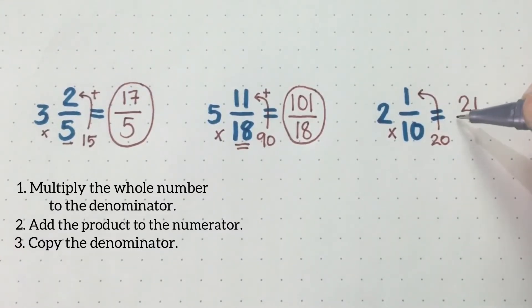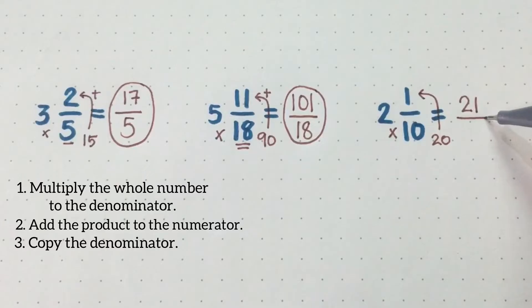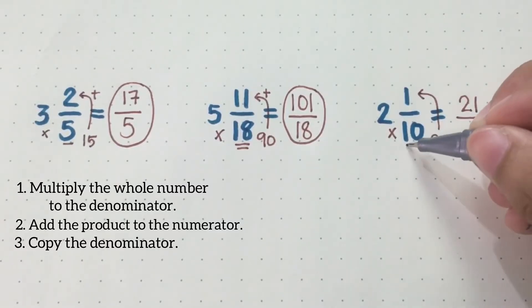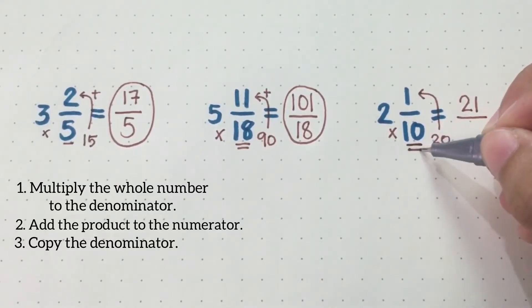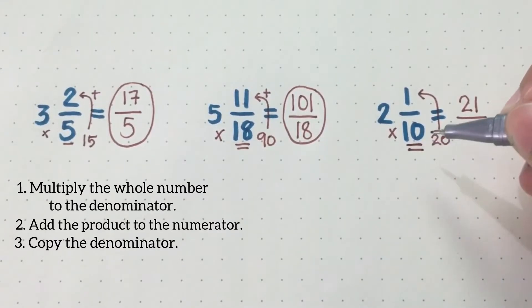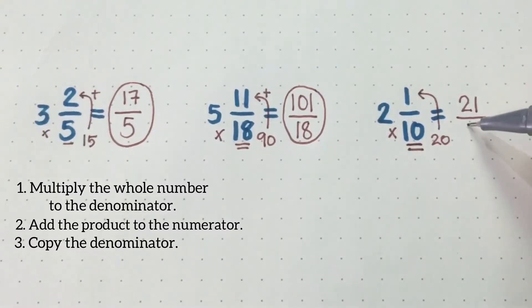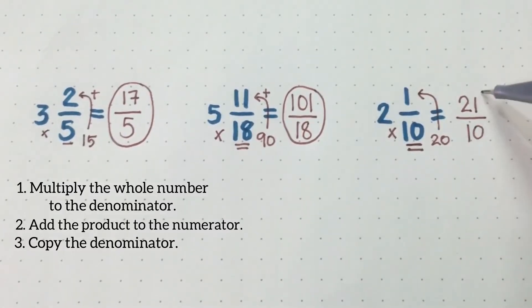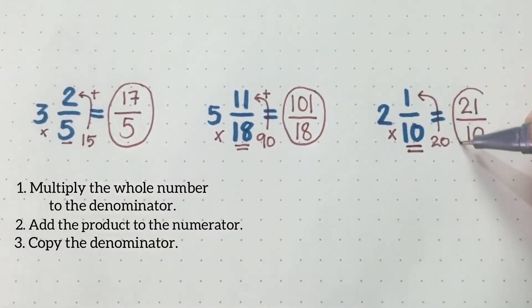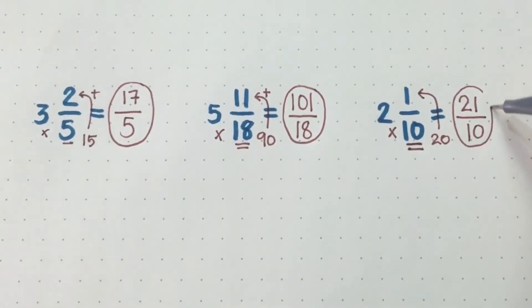You may write that in the numerator of our answer. And the last step, copy the denominator of the given mixed number, and that's 10. So the answer is 21 over 10.